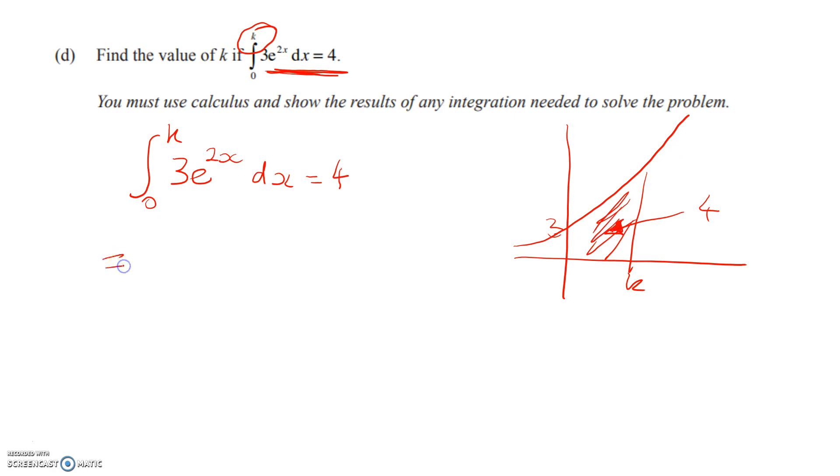So let's just start by integrating. Well, e to the 2x will integrate to itself, but when we differentiate that, that's going to give me 2e to the 2x. I want 3, not 2, so I divide through by the 2. You should be pretty used to that by now. And then we've got k here and 0 here.